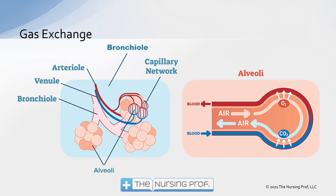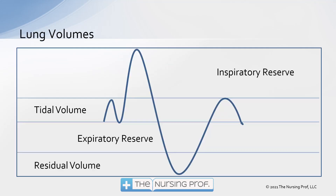So there are two processes occurring here. The ventilation part, which is getting the air into the lung, and the perfusion part, which is the blood flow around that alveolus so that gas exchange can occur.